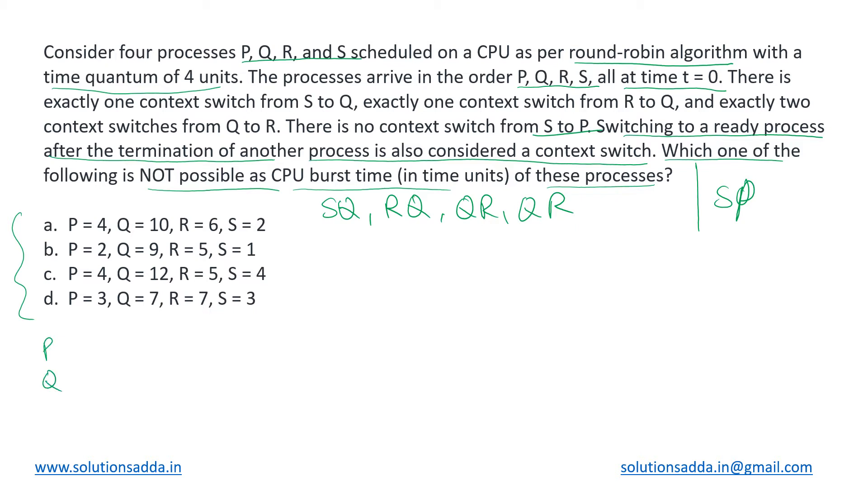The burst times they have given are 4, 10, 6, and 2. Let us try to construct the Gantt chart for this option and see if all the constraints are being followed. We will also be maintaining a queue over here. For the first we will schedule process P. Its burst time will reduce to 0, that will be pushed to the queue. By the time it executed, all of the others had arrived so they are being pushed, and now since P's quantum has reduced to 0, the burst time, it does not need to be pushed again to the queue.